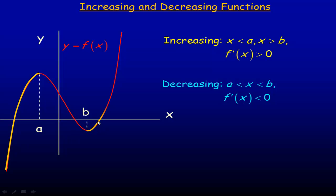From this point towards the right it's also increasing. So if the x-coordinate of that point is a and the x-coordinate of this point is b, to the left of a it's increasing — so it's increasing where x is less than a. It's also increasing where x is to the right of b, or greater than b. In between this point and this point, the graph is going down between a and b, so we say it's decreasing on the interval where x is greater than a and less than b.